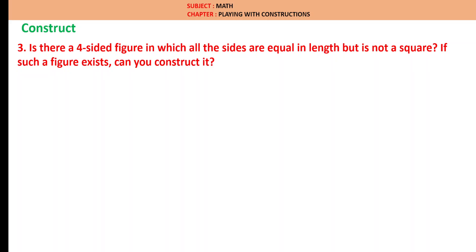Construct: Is there a four-sided figure which all sides are equal in length but it is not a square? If such figure exists, can you construct it? Yes. Other than square, rhombus is a figure where all four sides are equal. The difference between rhombus and square is that in square, all the angles are right angles, each angle is 90 degrees. But in rhombus, it is not equal. One more difference is in square, diagonals are equal but in rhombus, diagonals are not equal. Another difference is in square, one diagonal is greater than the other one, and they intersect perpendicular to each other.